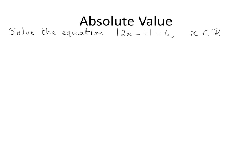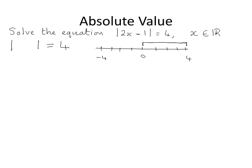You're asked to solve the equation: the absolute value of two x minus one is equal to four. If the absolute value of something equals four, that means the distance from whatever is inside the absolute value sign to zero is four. So on the number line, we could be talking about a distance of four to the right, or a distance of four to the left. That means whatever is inside the absolute value symbol is either four or minus four.